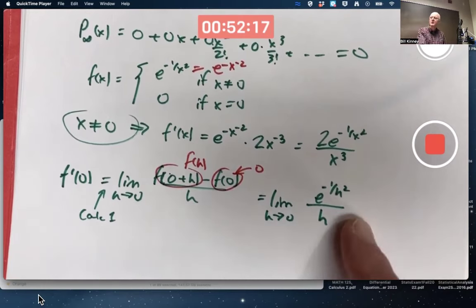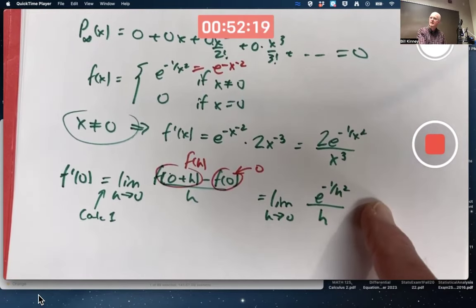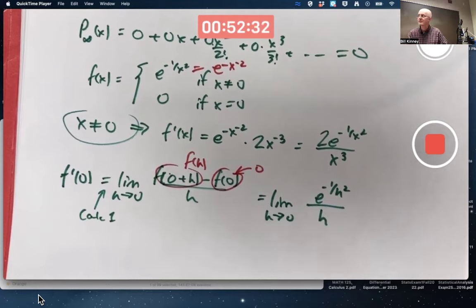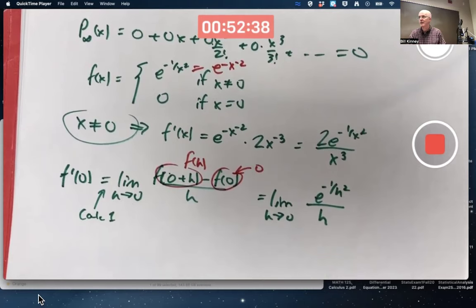It's tempting to think, oh I should use L'Hôpital's rule there. It is a zero over zero indeterminate form. Both the top and the bottom are going to zero as h goes to zero. But without showing you the details, if you try using L'Hôpital's rule, it gets worse. It doesn't help. The derivatives you get and the new fraction you get are even more complicated, and it's even less clear what the limit is. So instead, we do something else.